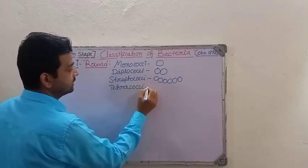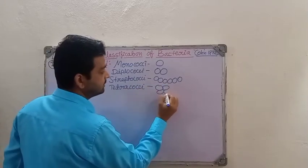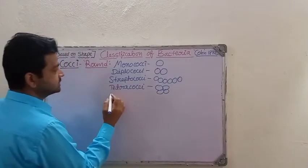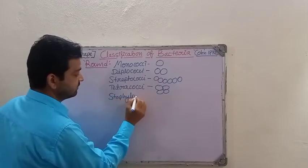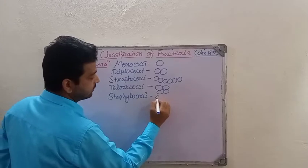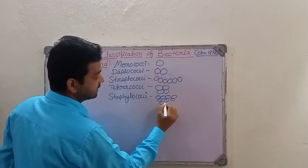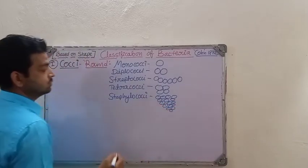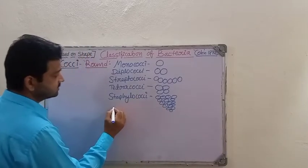Next is tetracocci. Tetracocci means four round-shaped bacteria joined together. Then staphylococci — staphylococci means the bacteria are going to be arranged in a bunch-of-grapes-like structure.